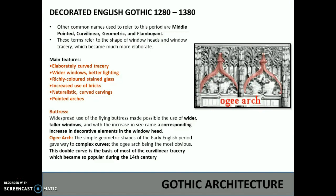The widespread use of the flying buttresses made possible the use of wider, taller windows, and with the increase in size came a corresponding increase in the decorative elements in the window head. The simple geometric shapes of the Early English period gave way to complex curves, the ogee arch being the most obvious. This double curve is the basis of most of the curvilinear traceries which became so popular during the 14th century.